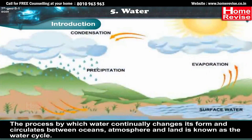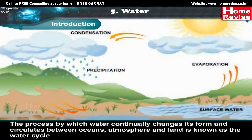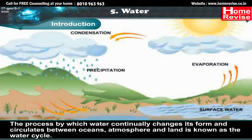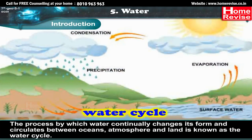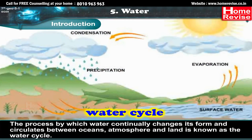The process by which water continually changes its form and circulates between oceans, atmosphere and land is known as the water cycle.